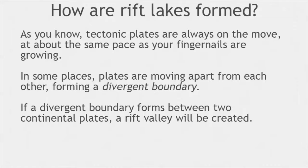So how are rift lakes formed? Tectonic plates are always on the move, at about the same pace as your fingernails are growing. In some places, tectonic plates are moving apart from each other, forming a divergent boundary. If a divergent boundary forms between two continental plates, a rift valley will be created.